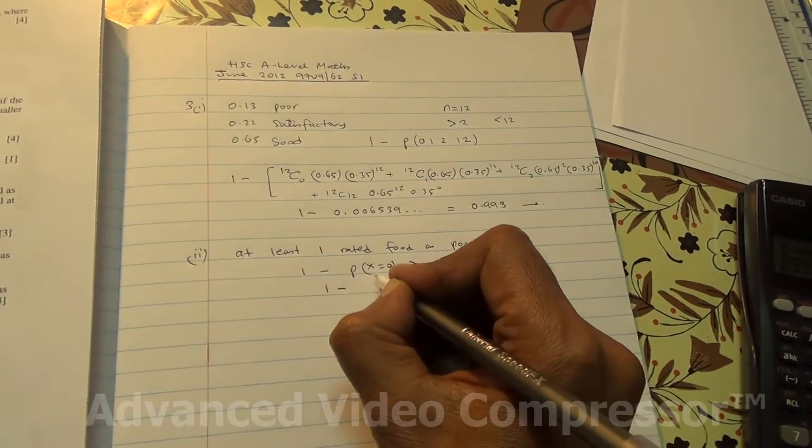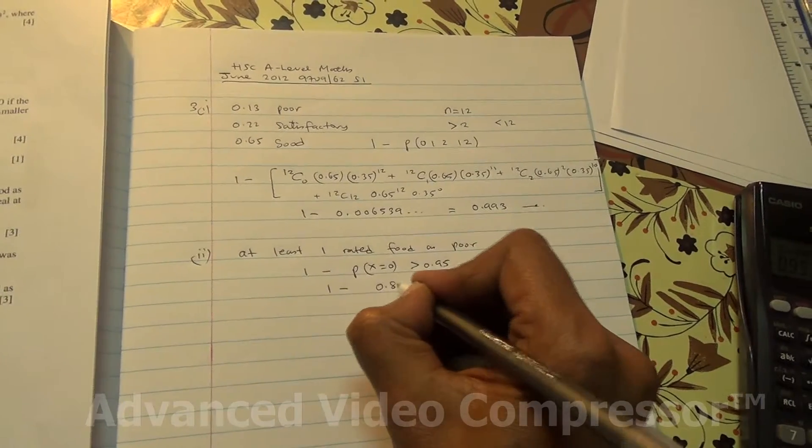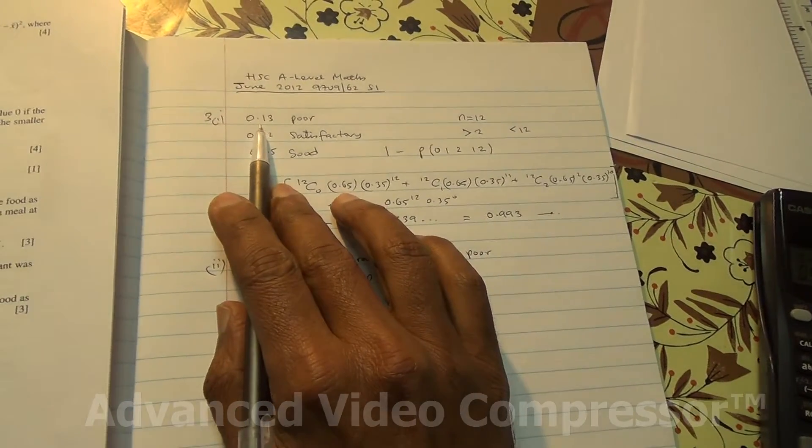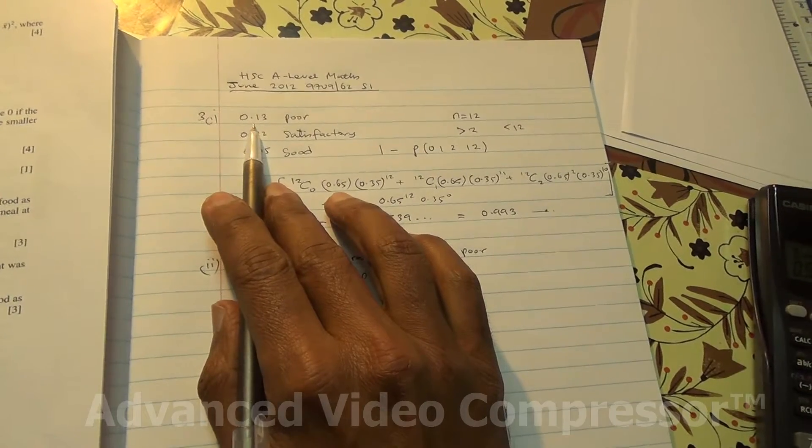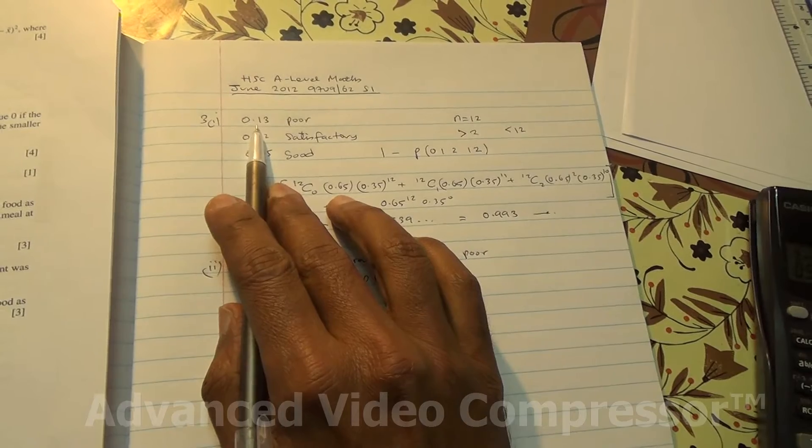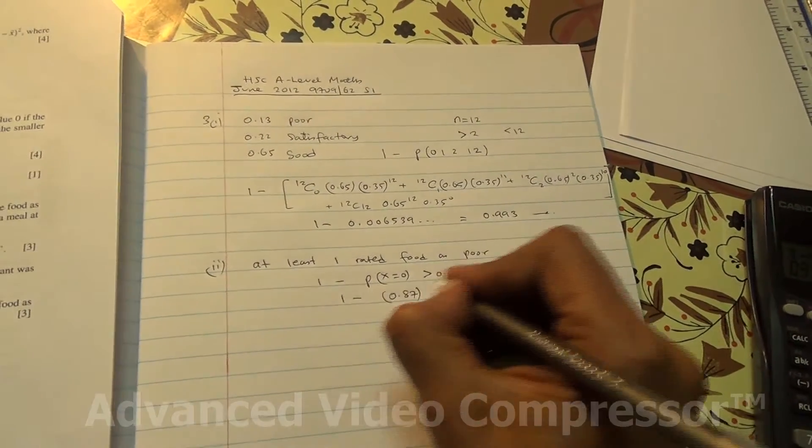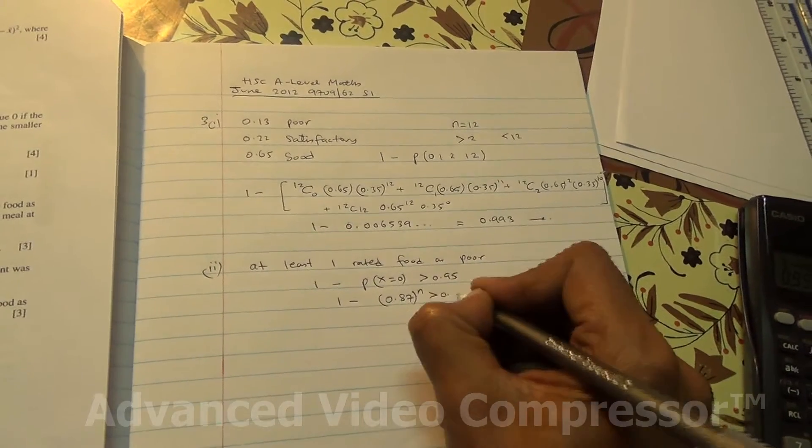one minus zero person rating the food as not poor is 0.87, because if rating them as poor is 0.13, rating them as not being poor is 0.87. So therefore, to the power of n, and that's going to be greater than 0.95.